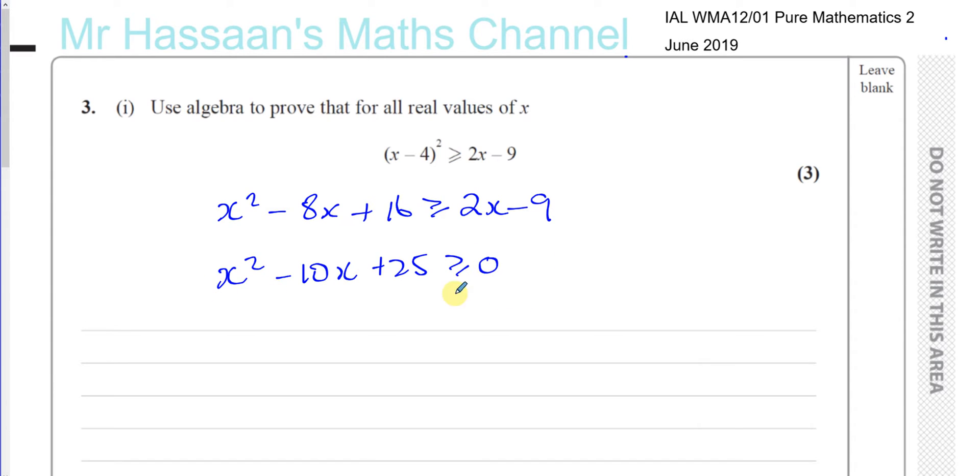And then this is a quadratic which can be factorized as a perfect square. As you can see, you're going to have x minus 5 squared. So you have x minus 5 all squared is greater than or equal to 0.